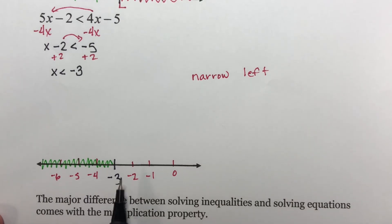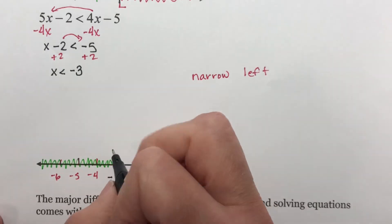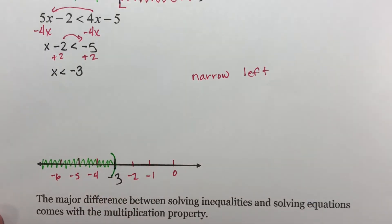Now what do I put on here? This is a less than. There is no equal to on it, so this gets parentheses. This is the answer to the graph portion.